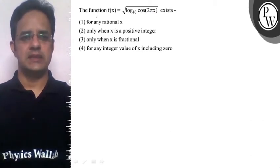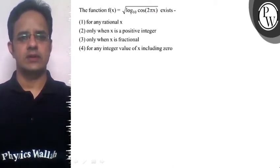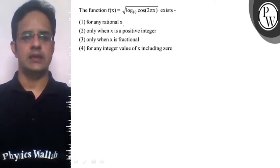Hello Bachcho, the problem is that the function f(x) = √(log₁₀(cos(2πx))) exists for any rational x,